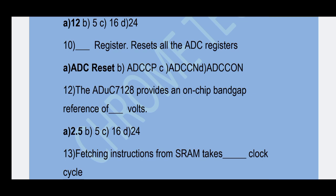Next question: The ADuC7128 provides an on-chip band gap reference of how many volts? Option A — 2.5 volts is the correct answer.